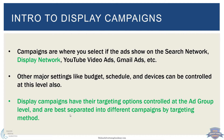Display campaigns want to emphasize they have their targeting options controlled at the ad group level, and they're best separated into different campaigns for different targeting. For example, a remarketing campaign — you'd want that ad group or ad groups to only have remarketing. You wouldn't want a campaign targeting remarketing and placements and all these other things. One display campaign will usually have one, maybe two ad groups, whereas a search campaign you'll have a lot of different ad groups to sort your keywords.